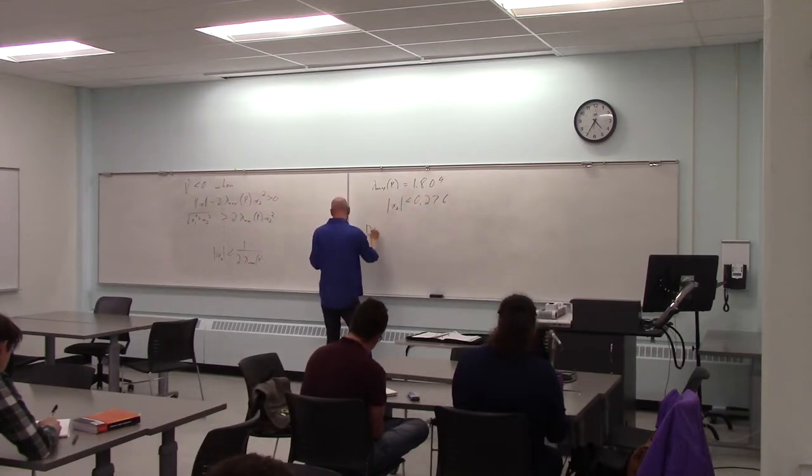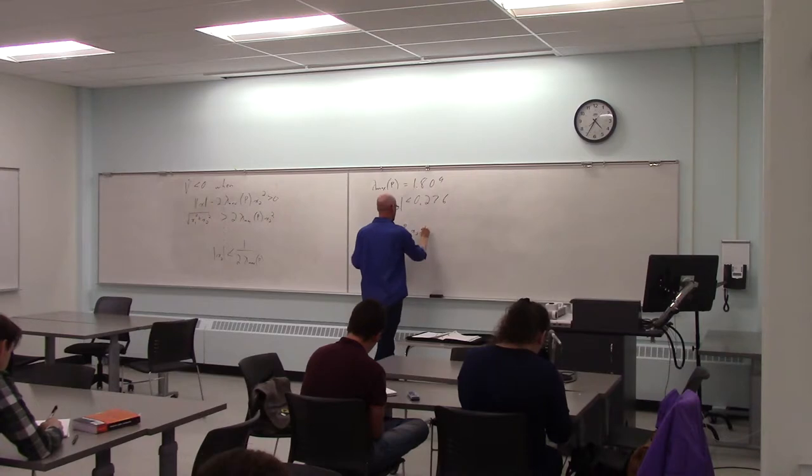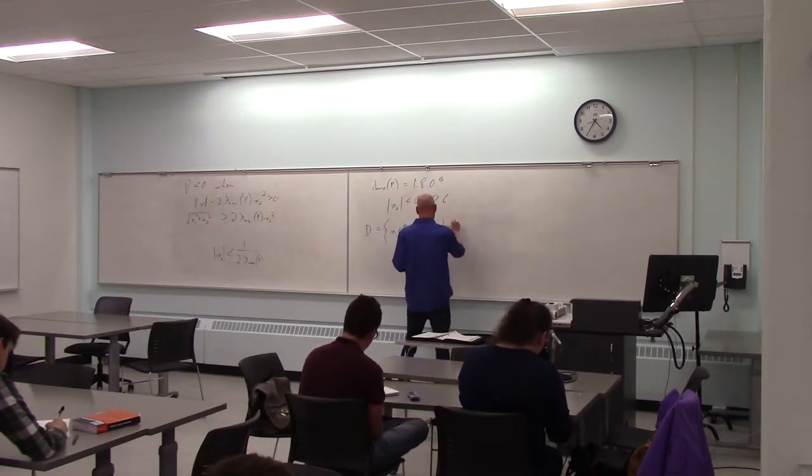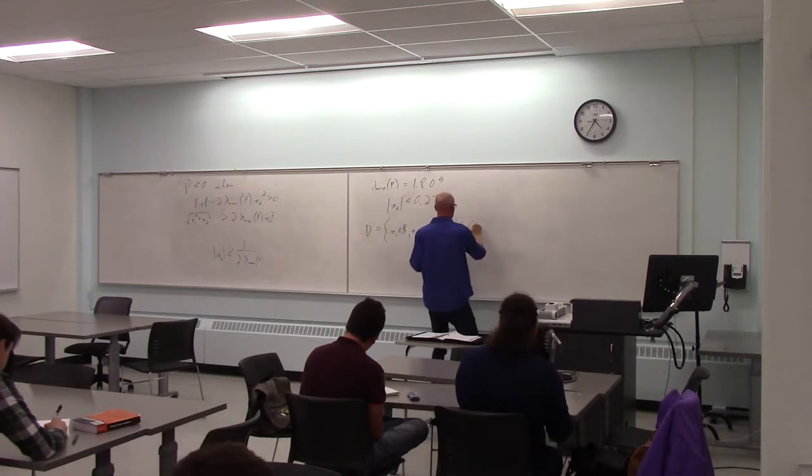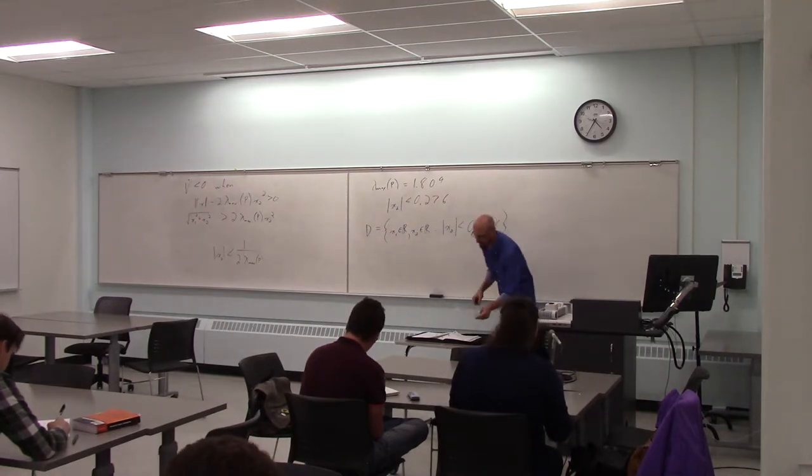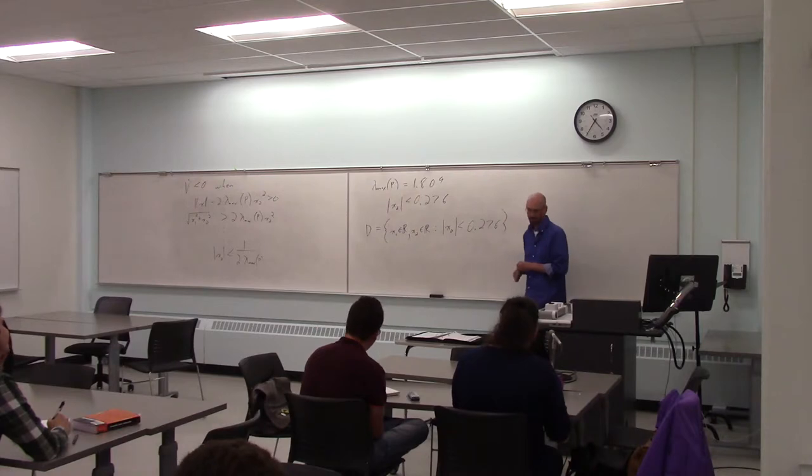So the maximum eigenvalue of p is 1.809 actually. So I have x2 being less than 0.276. So d, I could write like this formally. Because that was my basic question. I don't know if you remember, but that's what I was starting off with was the question of what is d? What is capital D?